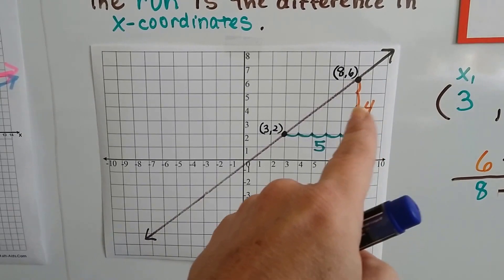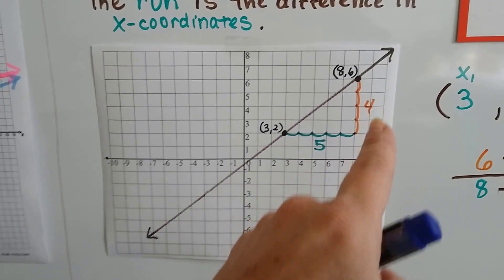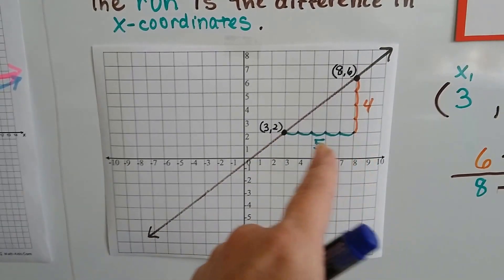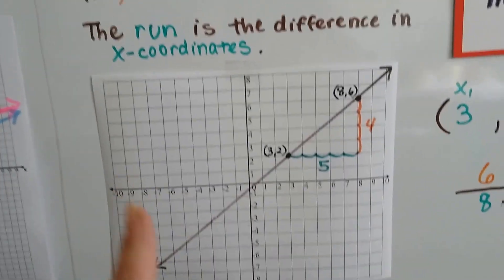See? From this point we go 1, 2, 3, 4. That's 4 for a rise. And 1, 2, 3, 4, 5 as a run. So it's 4 over 5.